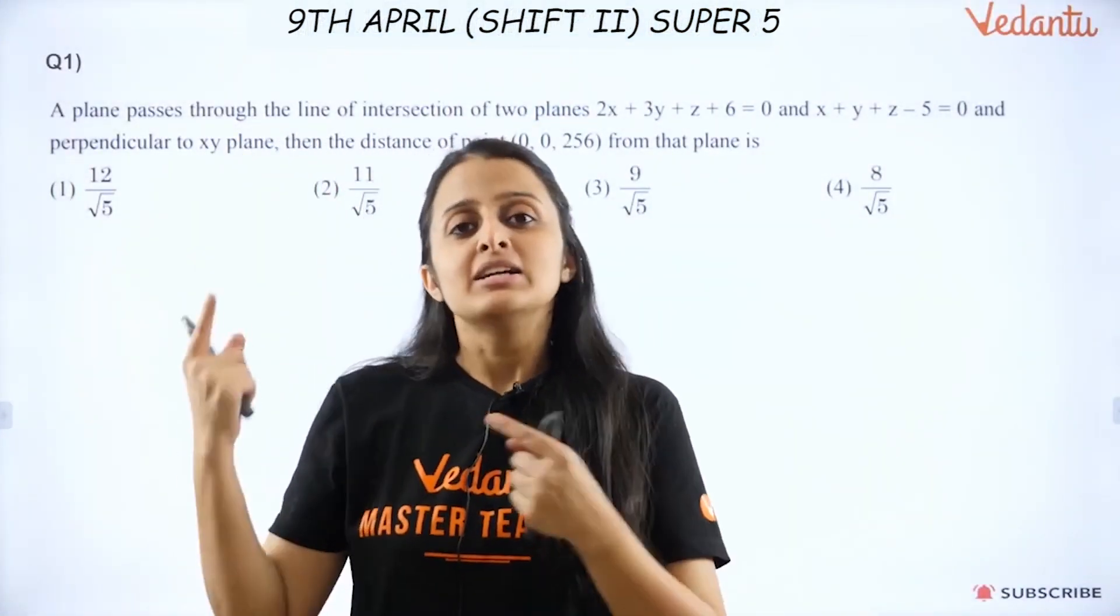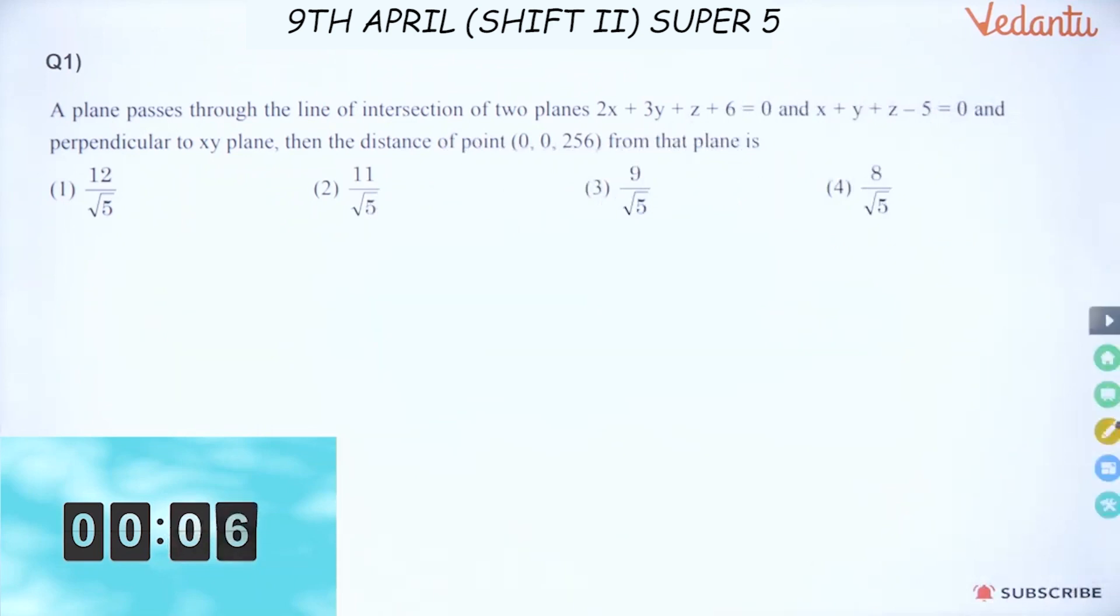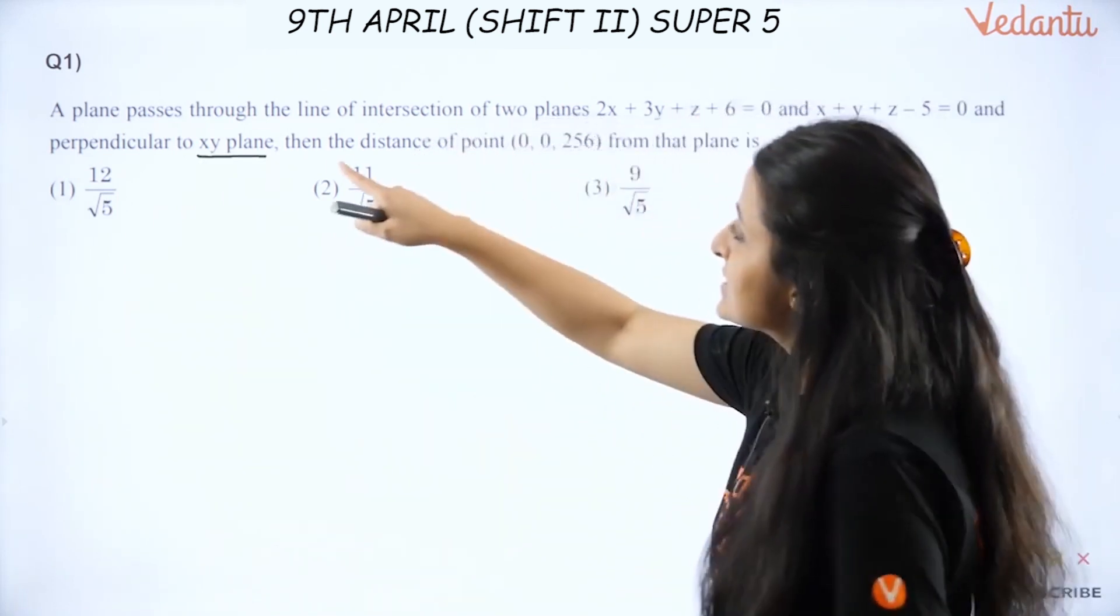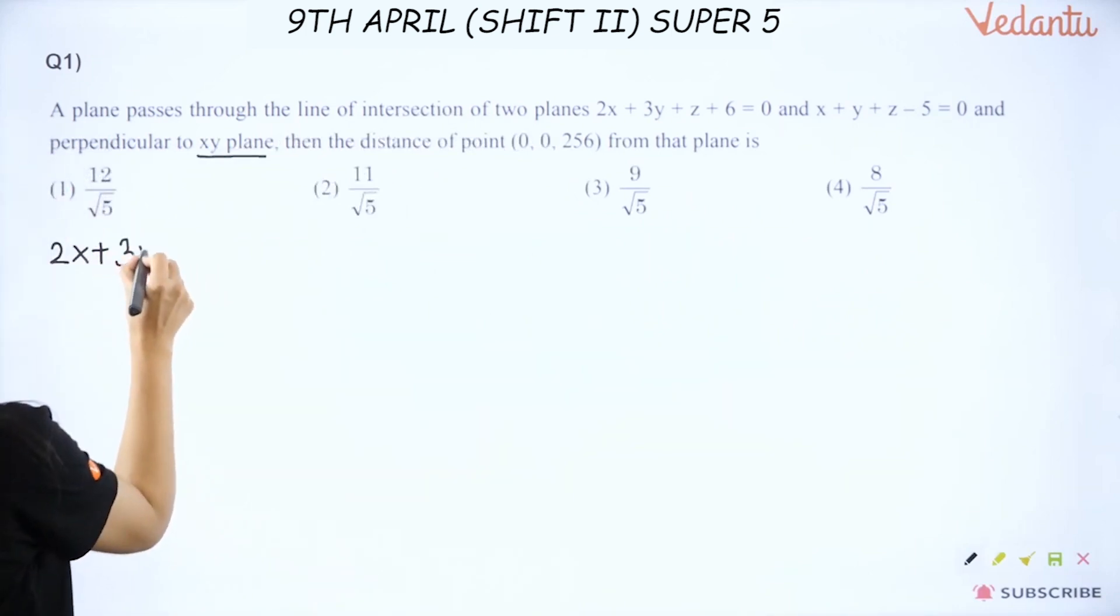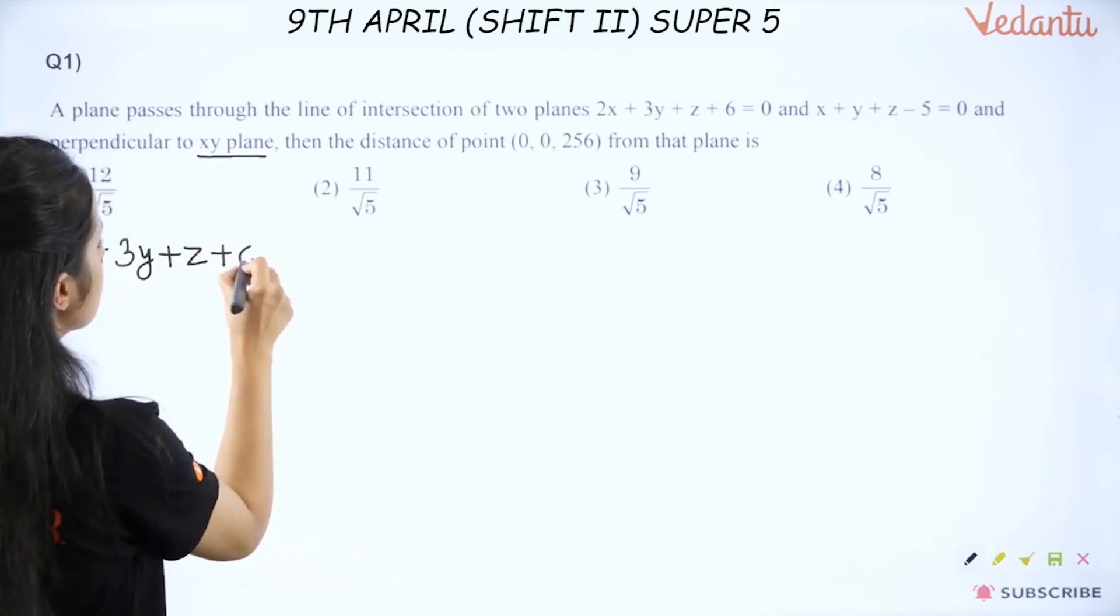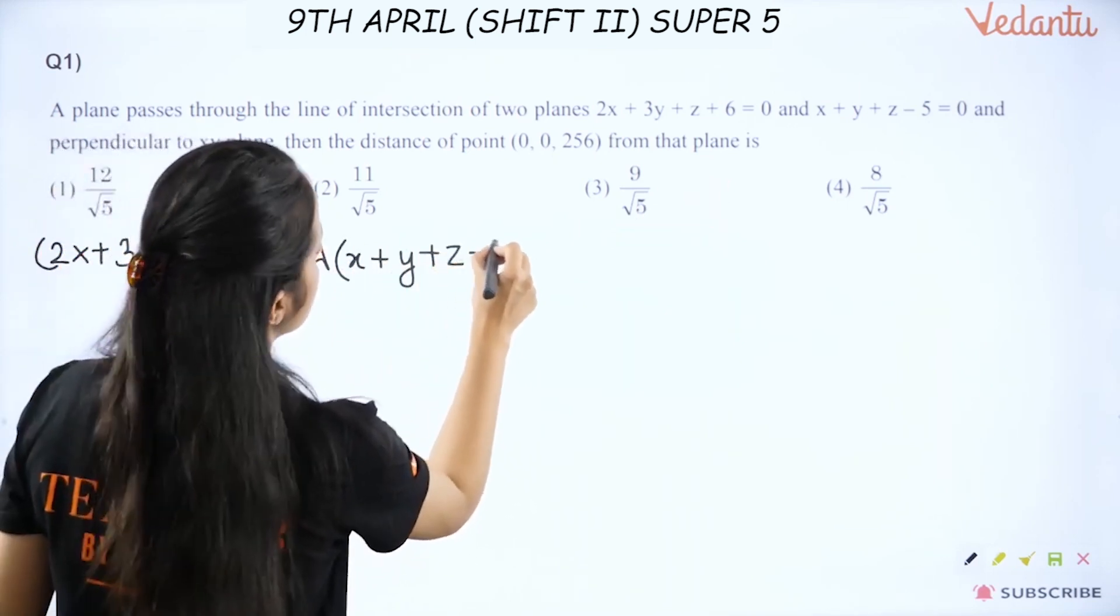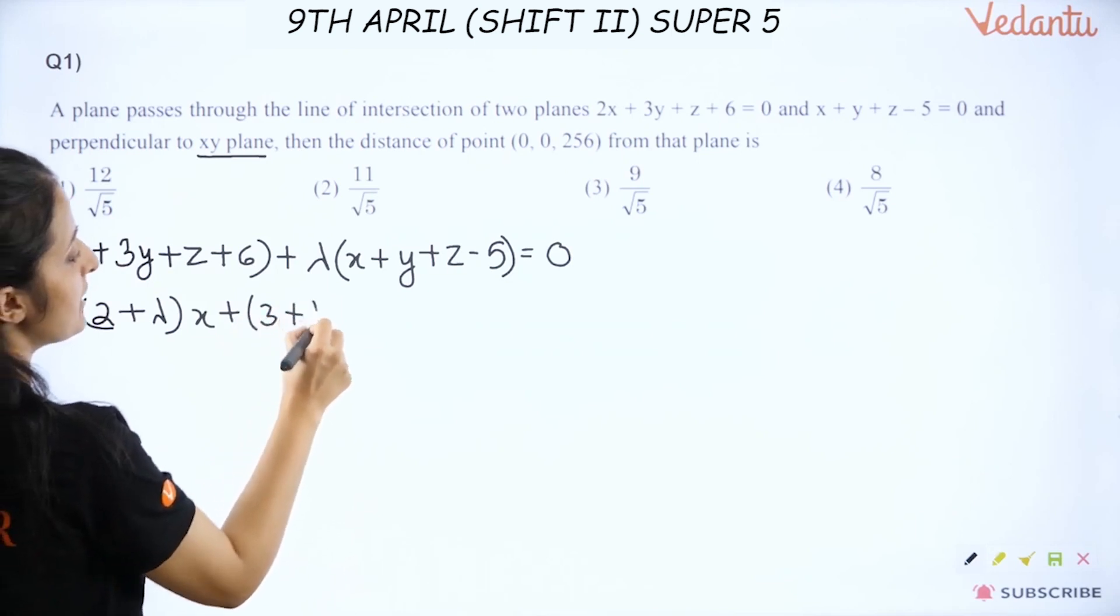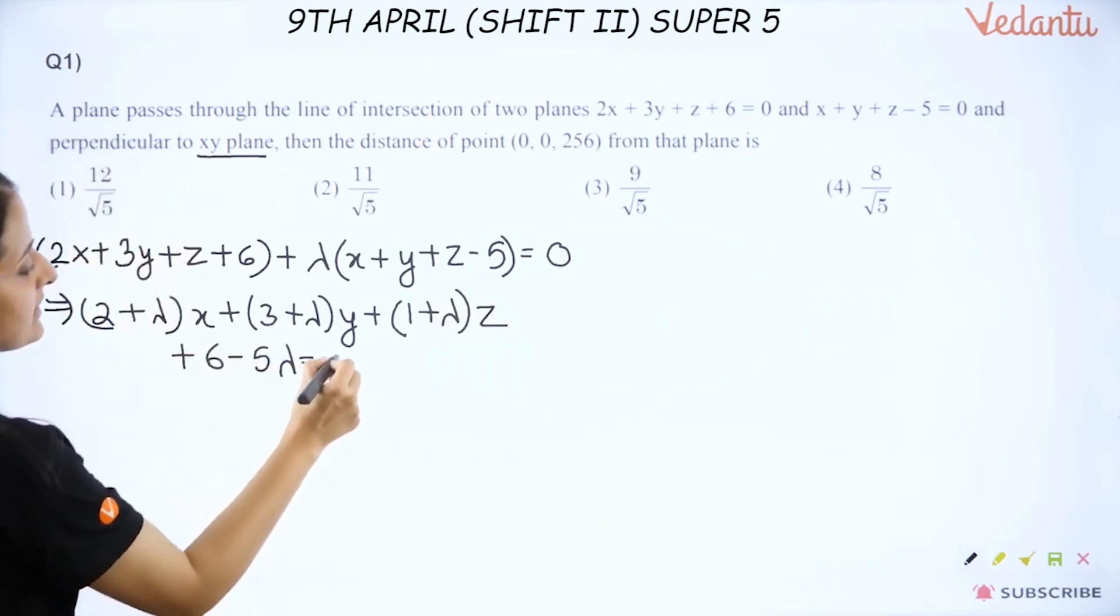So then, as you know the rules of the game. This is the first question. You read it. You get 10 seconds to read. So question 1, it is 3D geometry. Very simple. This says a plane passes through the line of intersection of these two planes. So, 2x + 3y + z + 6 plus lambda times the equation of the other plane which is x + y + z - 5 is equal to 0.